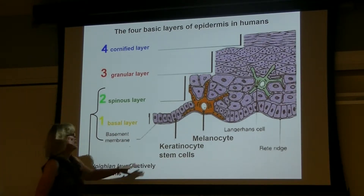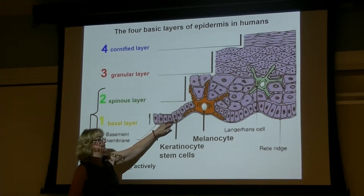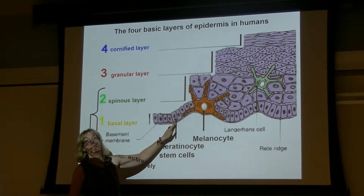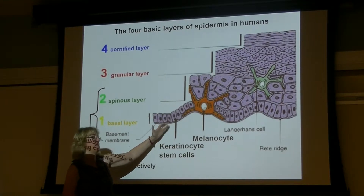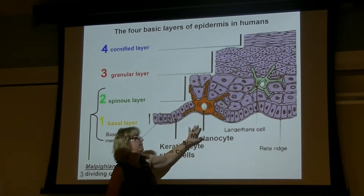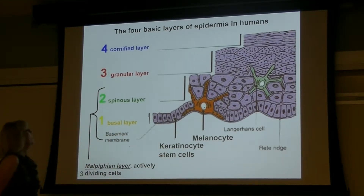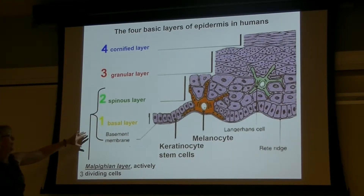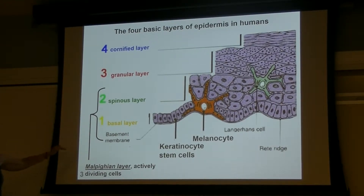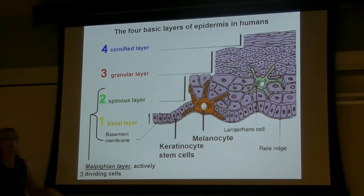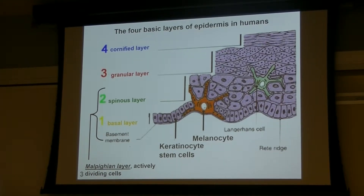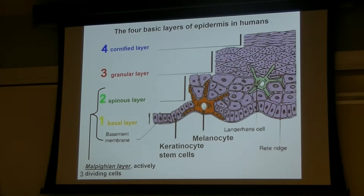These cells within the basal layer can also be called keratinocytes — that's another name for them. Melanocytes make pigment. The basal layer and the spinous layer are collectively called the Malpighian layers, and they're the ones that are actively dividing — going through mitosis. By the time we get to layer three, they've ceased that active mitosis and are just busy making more keratin.